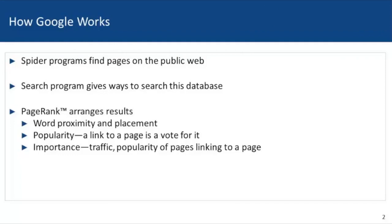I want to mention how Google executes your search query, because it works differently than a search run in a database such as PubMed. Spider programs crawl a significant chunk of the web each day and index the results. PageRank is the primary determinant of the way Google presents results; however, there are about 200 other factors involved in calculating how a page is ranked.